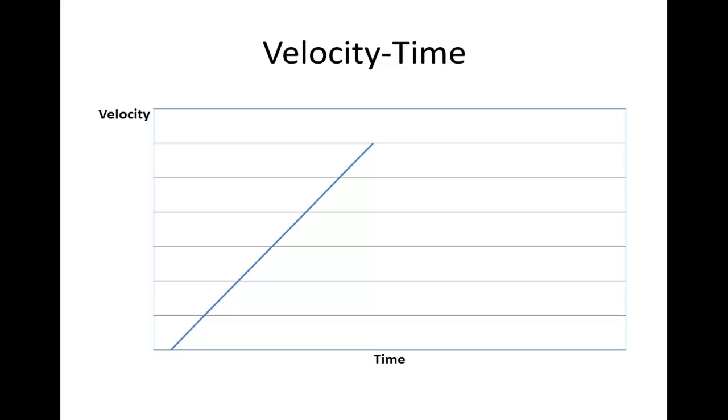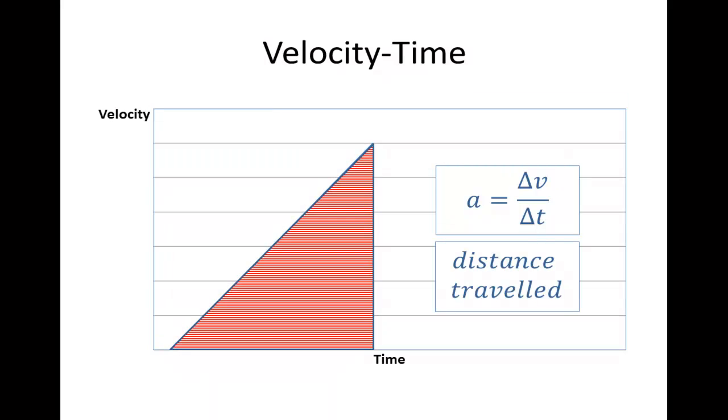If we take the gradient of this line, in other words, the change in velocity over the change in time, what this tells us is for that measured period, the acceleration of that moving body. Also, if we measure the area under the line, what this tells us is the distance travelled by that moving body for that period that is measured.